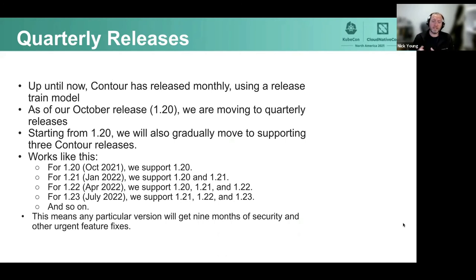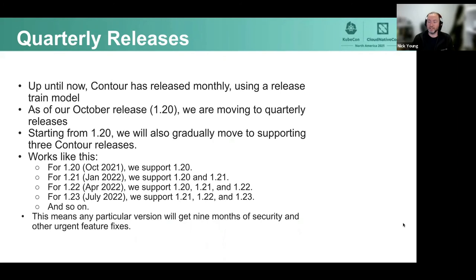What that means at the end of the day is that any particular version, once we get to 1.22, will get nine months of security and other urgent fixes. Nine months is a slightly odd cadence — Kubernetes has specifically moved away from that by changing to once a year — but we're hoping it'll be good enough. We'll see how we go once we've run this quarterly release support for a while and see how much effort it takes and how much value everyone's getting out of it.